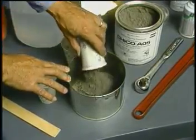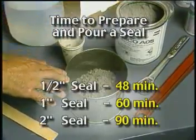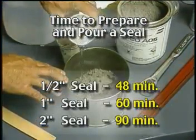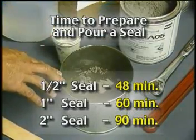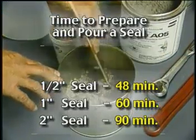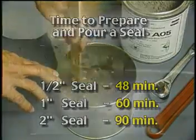In a national survey of North American installers, the average time to properly prepare and pour a seal with the conventional method ranged from 48 minutes for a half-inch sealing fitting to over an hour and a half for a two-inch fitting.